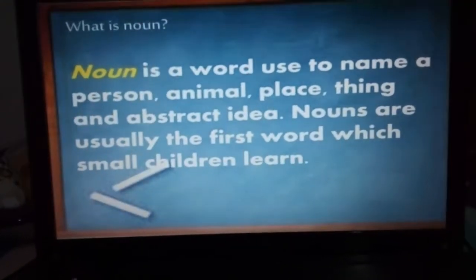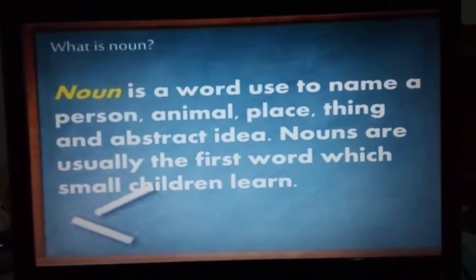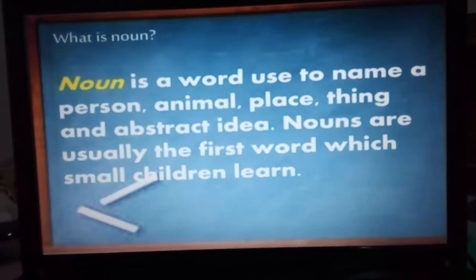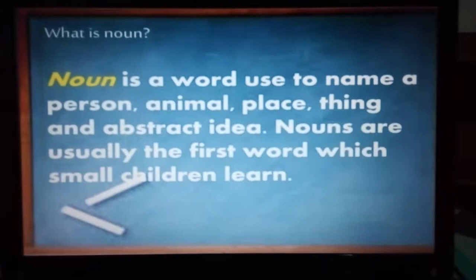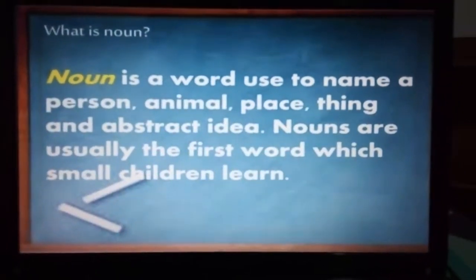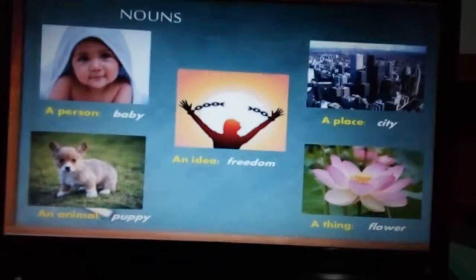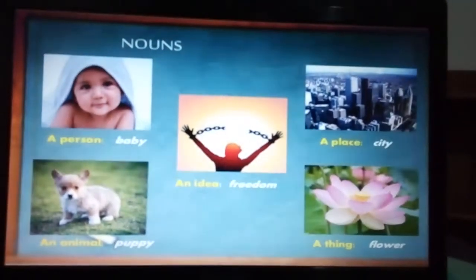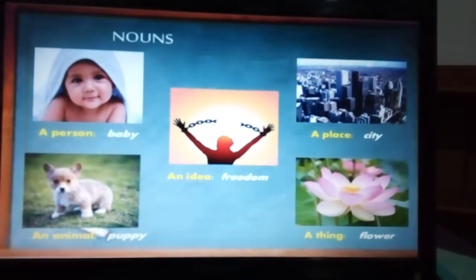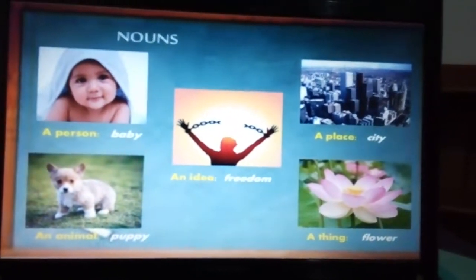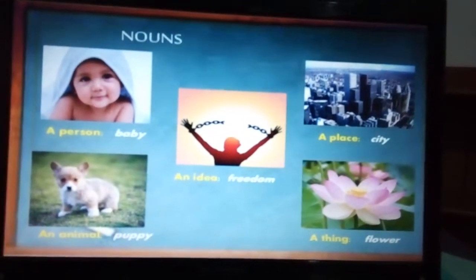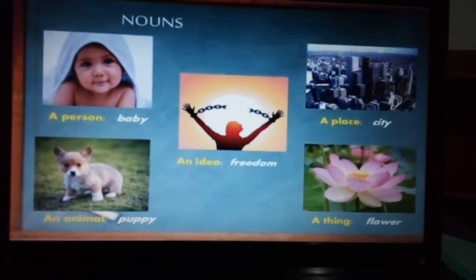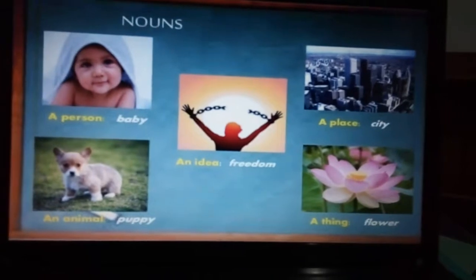So the definition of a noun is that it is a word used to name a person, animal, place, thing, or abstract ideas. Abstract ideas are things that we cannot see — they are in our mind, but we will see them later. So nouns can be a person, an animal, an idea, a place, or a thing. A person could be a baby, a student, or Maria, Marta, your mother, etc. An idea could be freedom or kindness. A place could be a city, a house, or a pool. An animal can be a puppy or a cat. A thing can be a flower, a chair, a book, a shelf, a bag, etc.